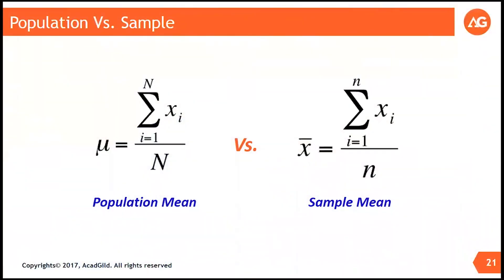I take each of their height, I sum them all up divided by the number of people, male persons in US who are greater than age 25. I get the population mean which is denoted as mu.